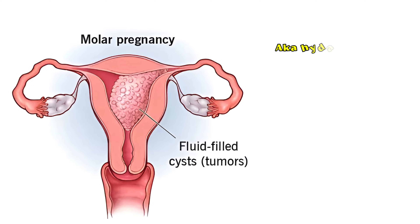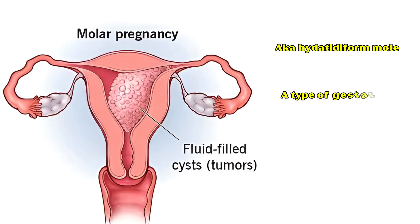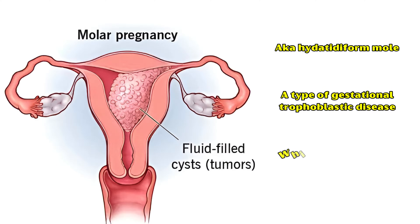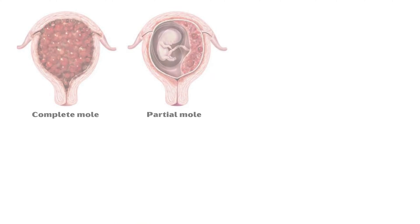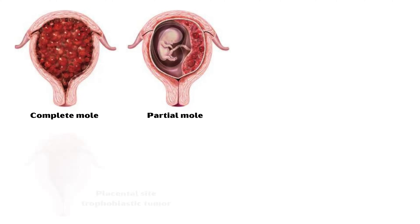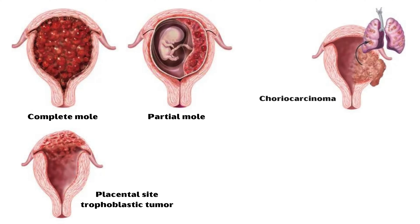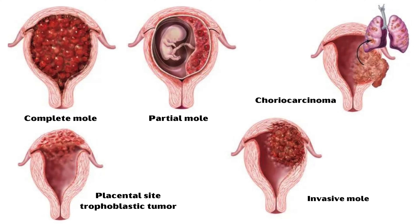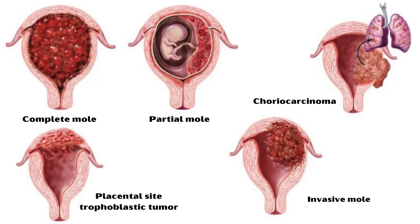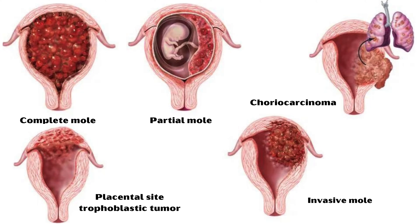Molar pregnancy, also known as hydatidiform mole, is a type of gestational trophoblastic disease which includes several disease conditions arising from the placenta. Some of these diseases include complete and partial moles, placental site trophoblastic tumors, choriocarcinomas, and invasive moles. The uniqueness of the disease is that the tumor originates only from gestational tissue rather than from maternal tissue.